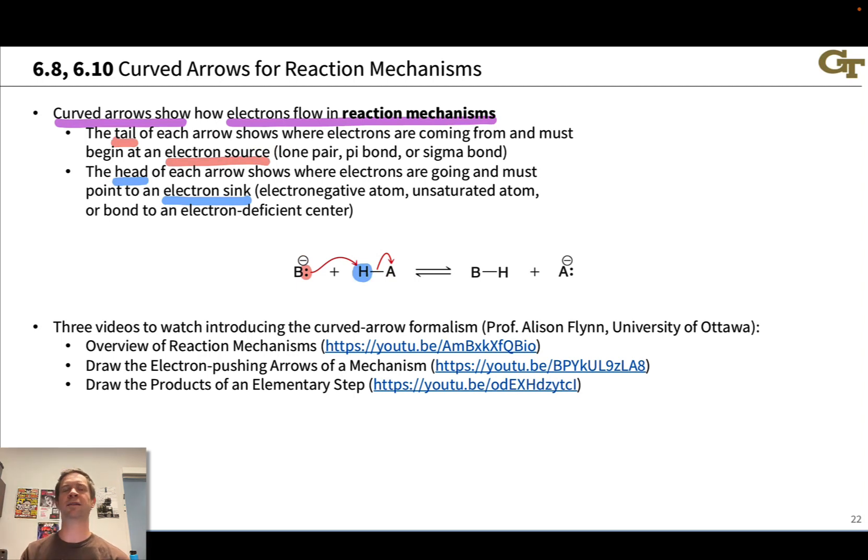And more generally, we can think of this as an electron sink. This might be an electronegative atom, bromine, chlorine, oxygen. It might be an electrophilic atom like H in HA or a carbon in a carbon halogen bond or something like that. An electron deficient center can also be the point where a curved arrow ends.